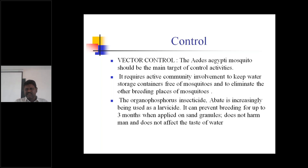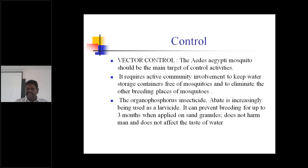Different vector control mechanisms can be followed. Try to remove stored water every seven days so that breeding should not take place. Eliminate the breeding sites — clean the breeding sites properly and put the insecticide properly. Organophosphorus insecticide Abate is increasingly being used as a larvicide.